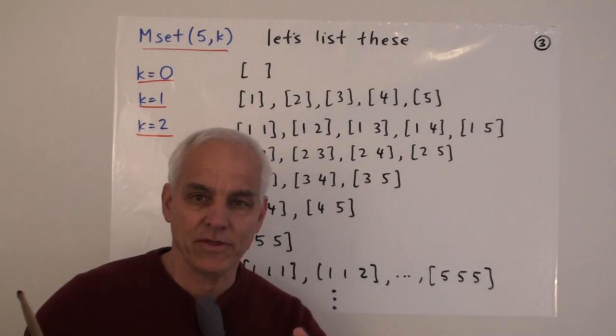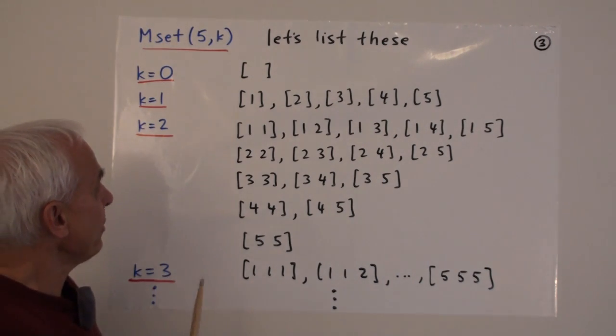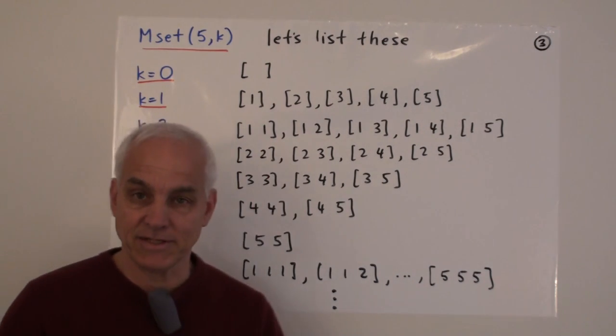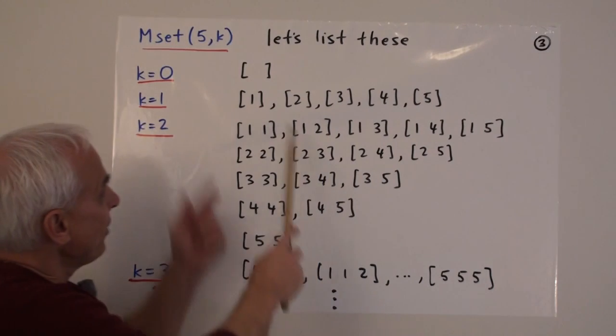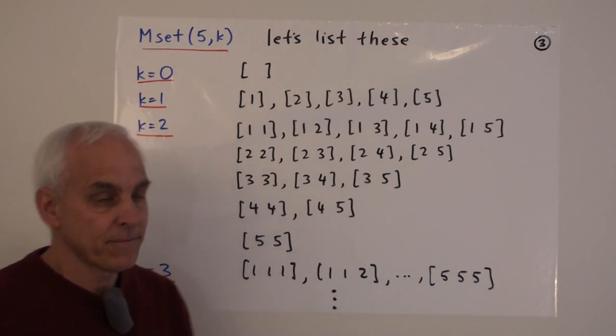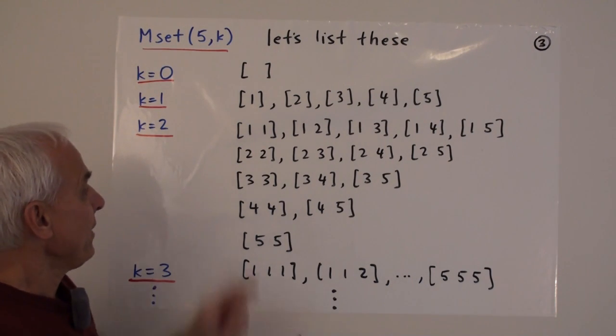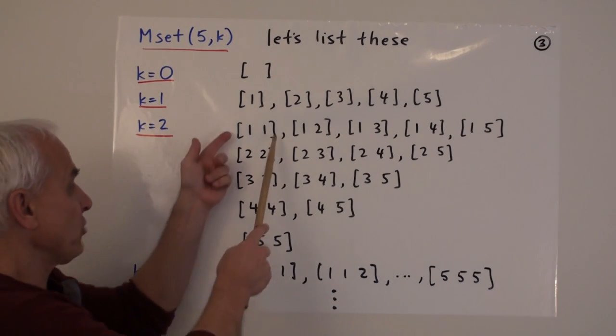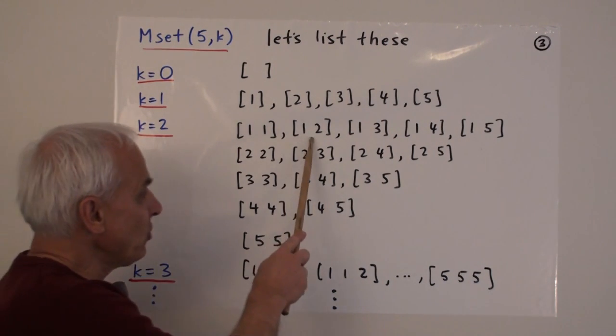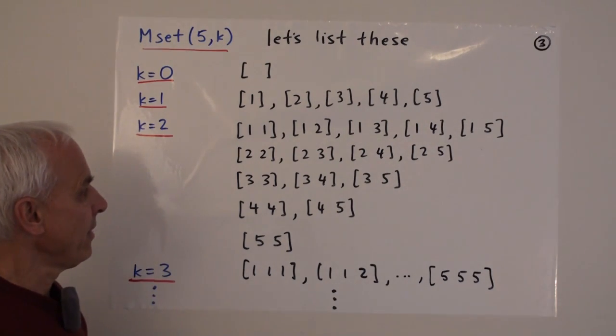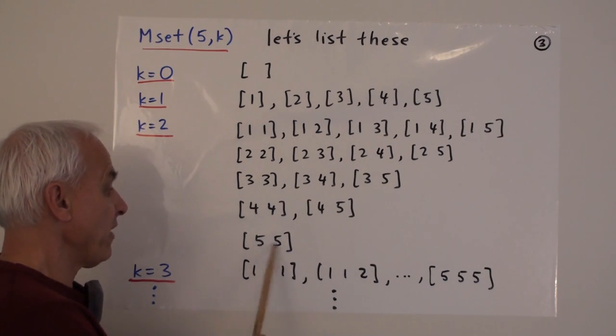So, to get an initial handle on things, let's list some k-sets from five. We'll look at Mset(5,k). We'll start with k equals zero, where we just have the empty multiset. When k equals one, well, there are these five possibilities: the multiset [1], [2], [3], [4], and [5]. When k equals two, a little bit more interesting, now we're able to list these multisets. Natural to start with [1,1]. So, repetitions are allowed, so we are allowed to put two ones there. And then [1,2], [1,3], [1,4], [1,5], [2,2], [2,3], [2,4], [2,5], [3,3], [3,4], [3,5], [4,4], [4,5], and [5,5].